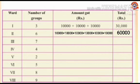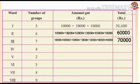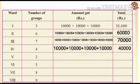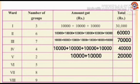Ward 3 has 7 groups, so the amount ward 3 got is 7 × 10,000 = 70,000. Ward 4 has 4 groups, so the amount ward 4 got is 4 × 10,000 = 40,000. Ward 5 has 5 groups, so the amount ward 5 got is 5 × 10,000 = 50,000.